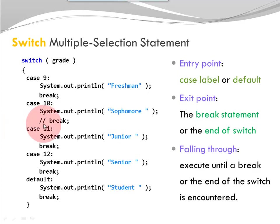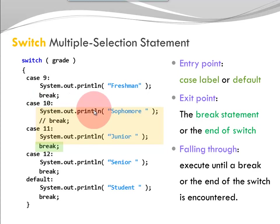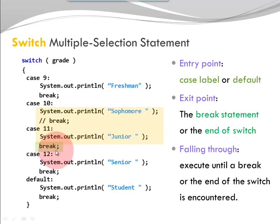Notice that I commented out one of the breaks here. So let's pretend my grade happens to be 10. I find my appropriate entry point — that would be case 10. I start executing system out print line sophomore. There's no break statement because we commented it out, so I keep falling through to the next case. I continue to print out junior. Now I hit the break statement, which is my exit point. So in this situation, if my grade is 10, I would print both sophomore and junior.